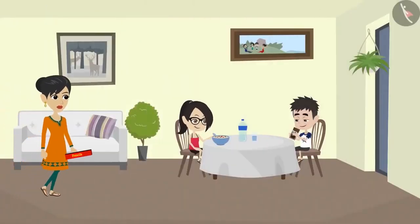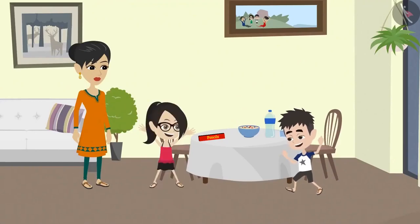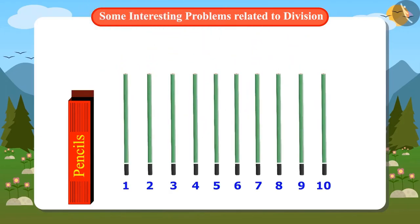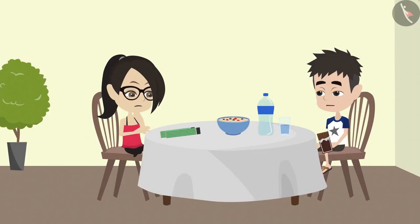Today, Mummy has brought a packet of pencils for Vandana and her brother. In this packet, there are 10 pencils. Vandana has to keep half of these pencils with her and give half of them to her brother.